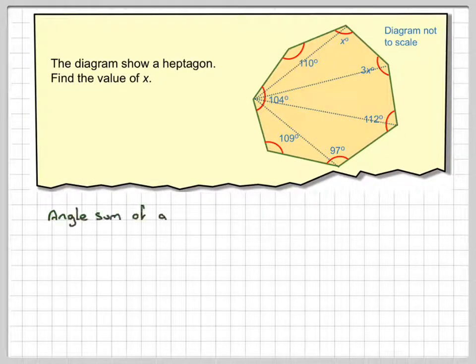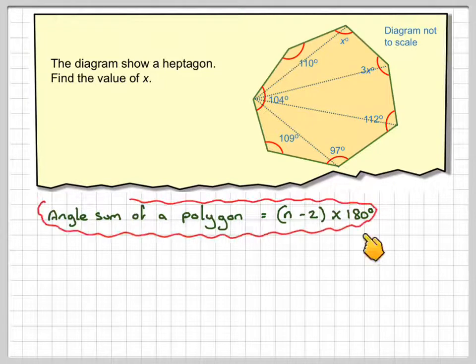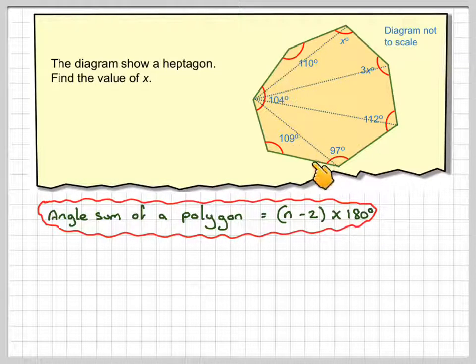So the angle sum of any polygon will be the number of sides, take away 2, times 180, because each triangle has an angle sum of 180.